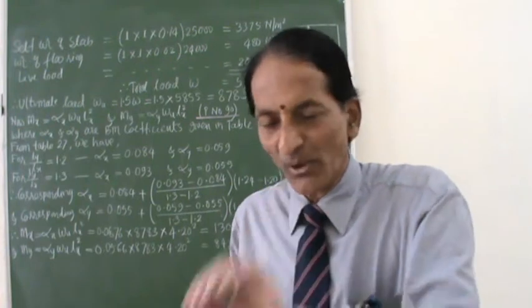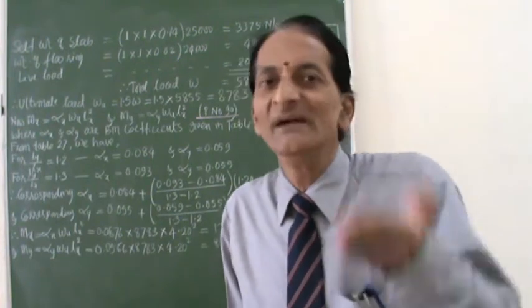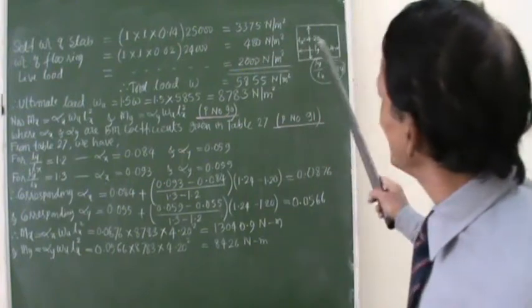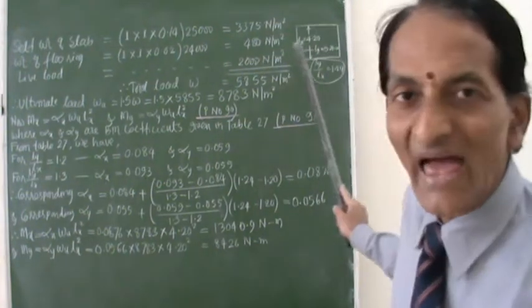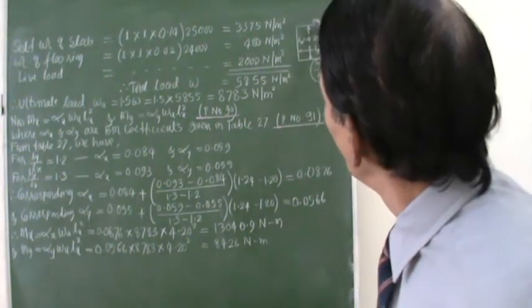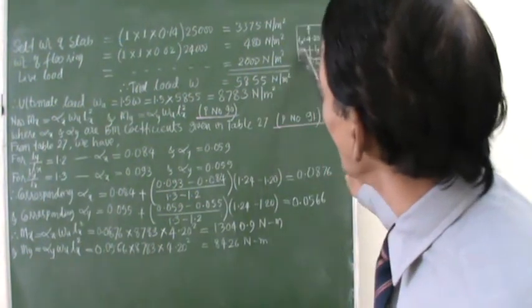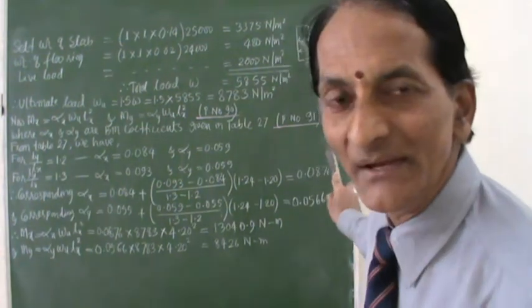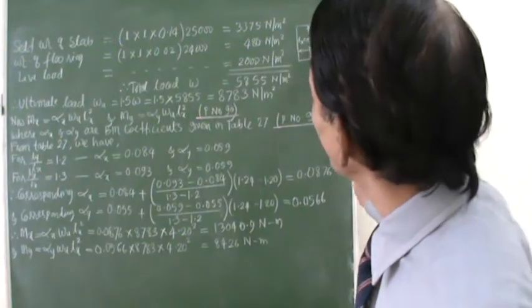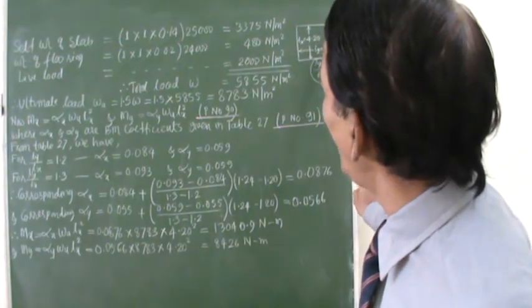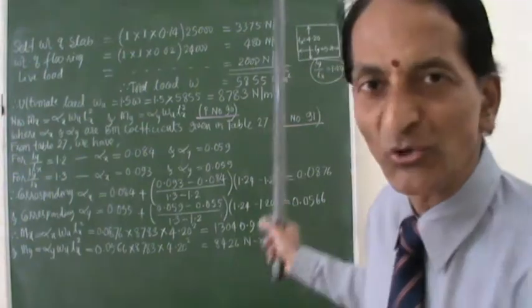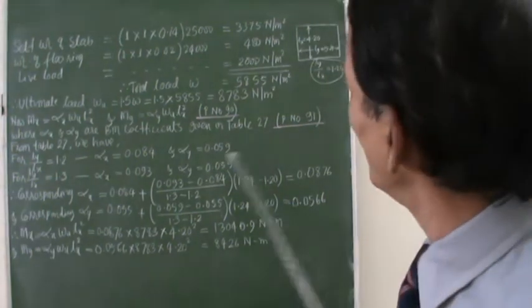In the problem, he has stated that the corners are free to lift. So he has given you a slab of dimension 4 meters in this direction, 5 meters in this direction. And you have calculated the effective spans Lx and Ly as 4.2 and 5.2. That we have done.